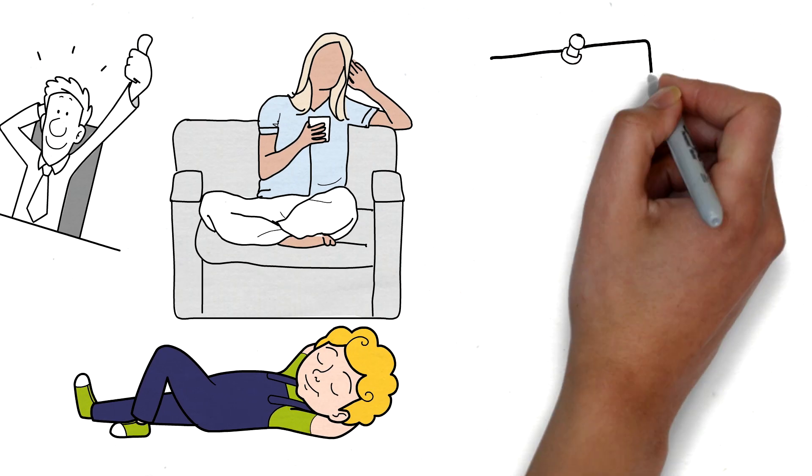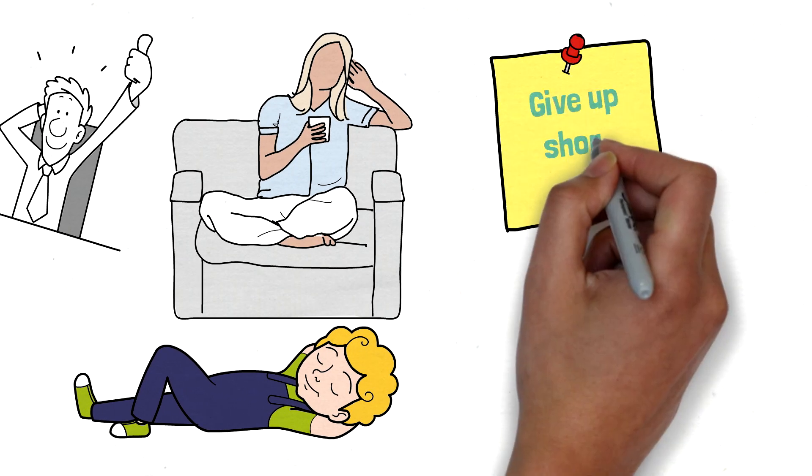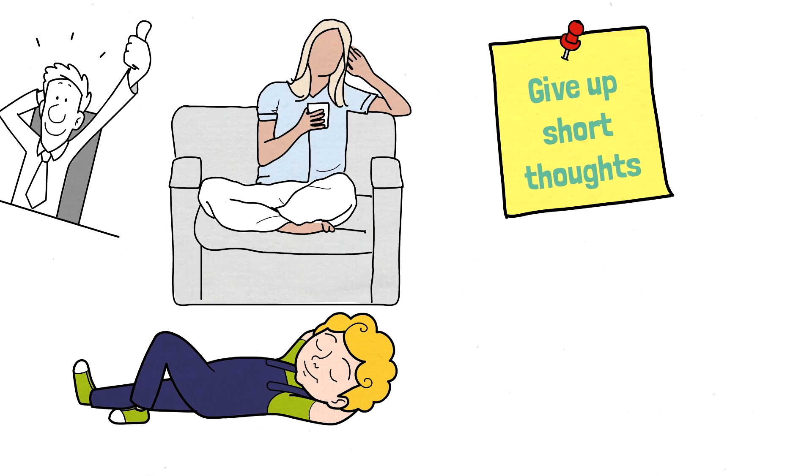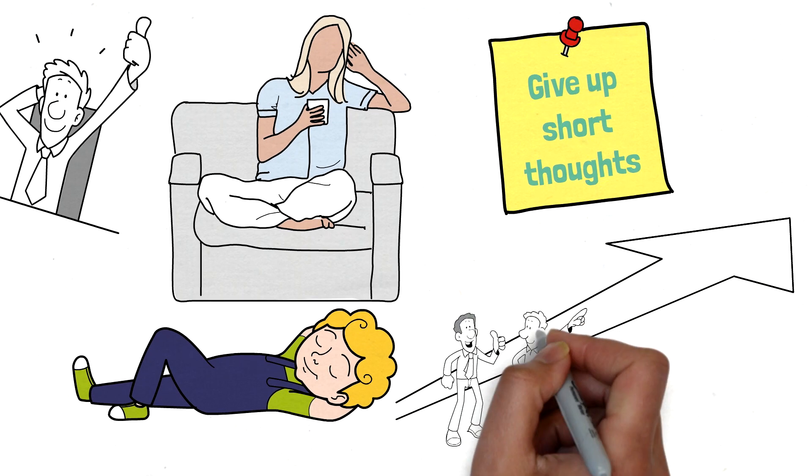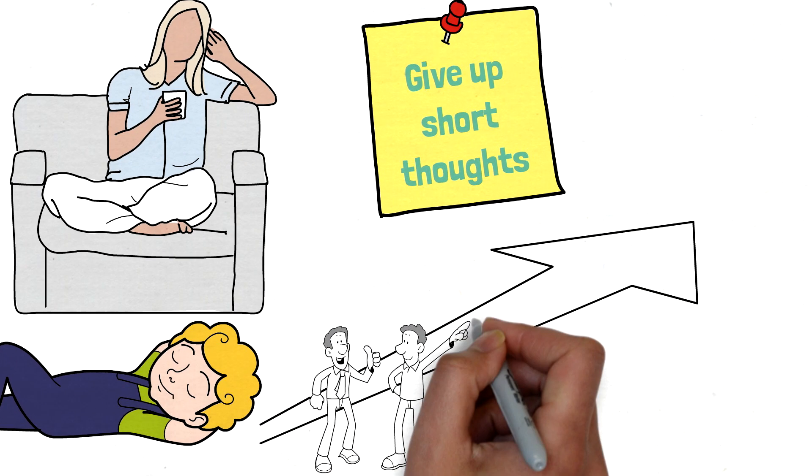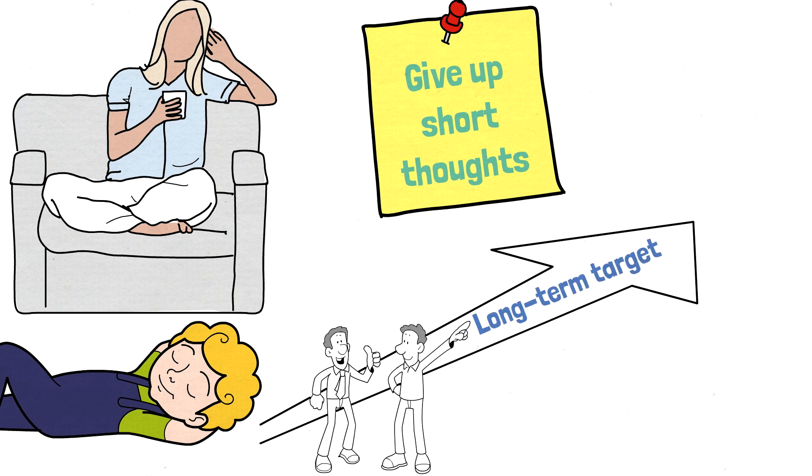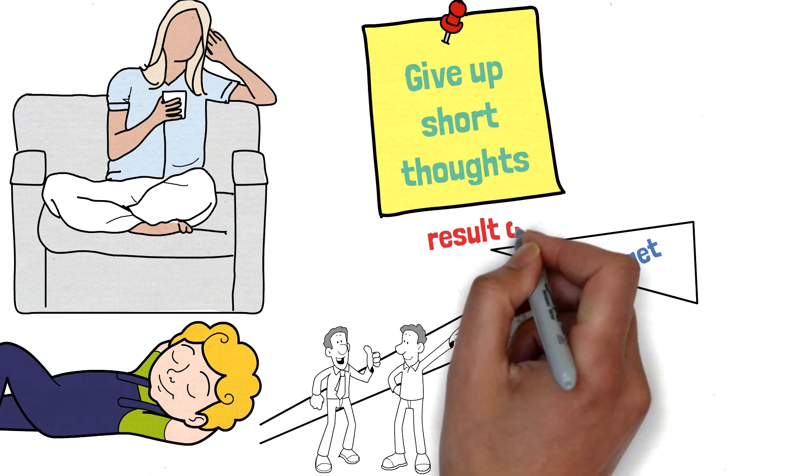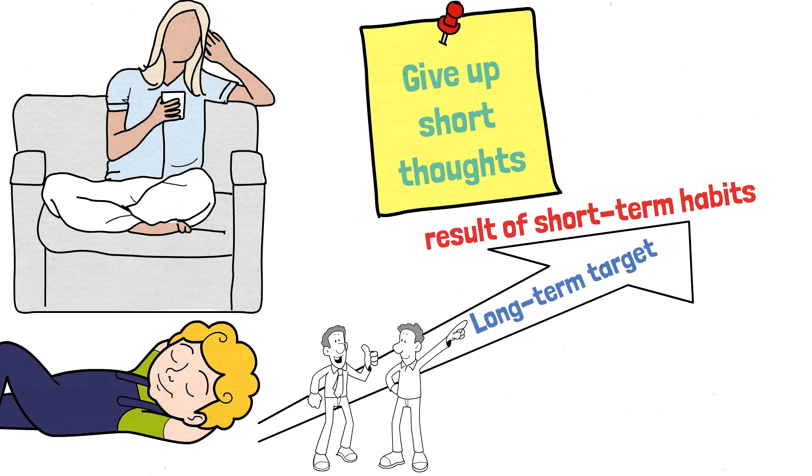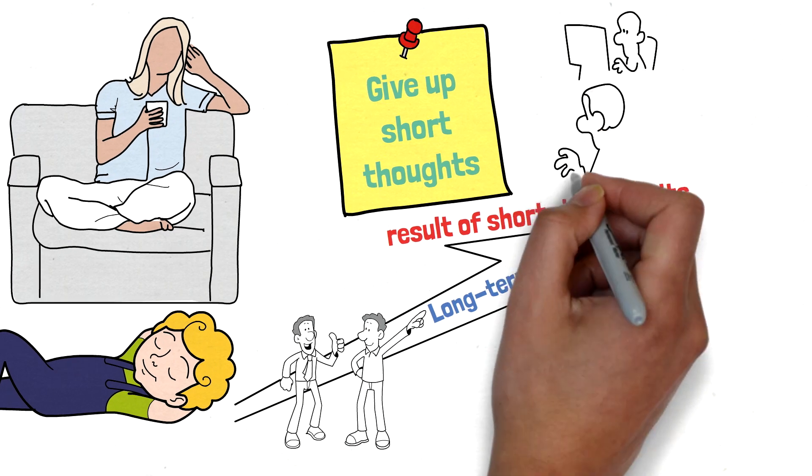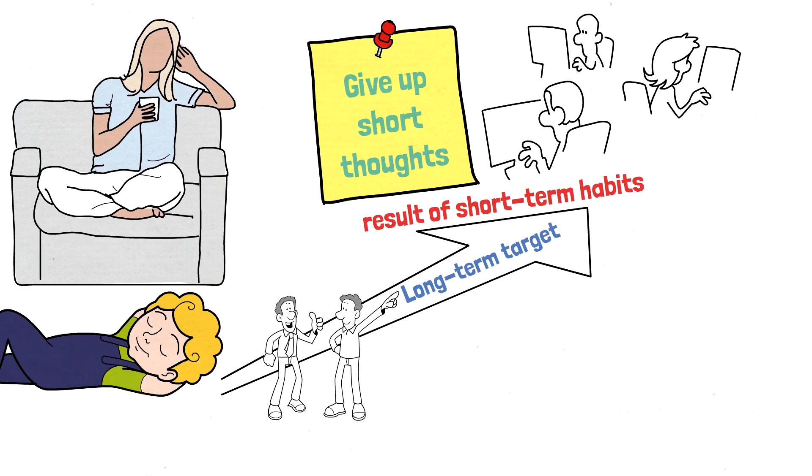Second, give up short thinking. You only live once, but if you do it right, once is enough. Successful people often set long-term goals, and they know that these goals are the result of short-term habits that they need to do every day. These short-term, healthy habits are something you do for yourself, not for the sake of a certain result.